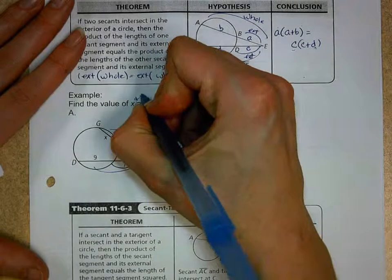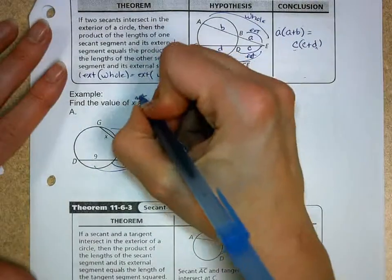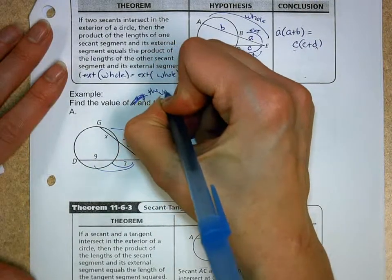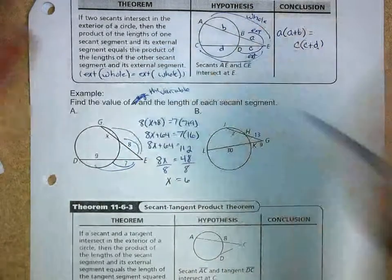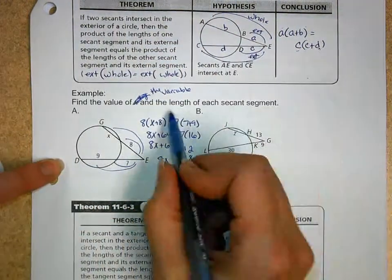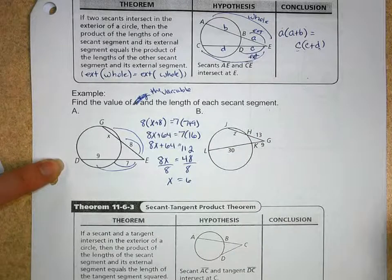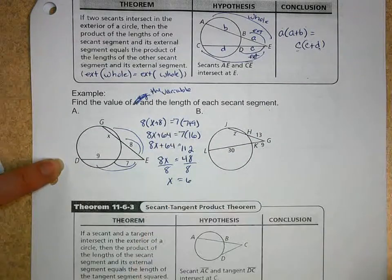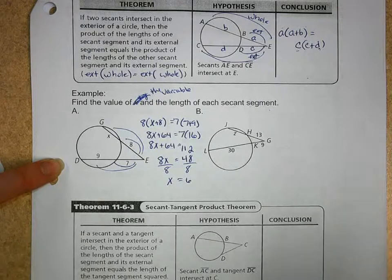So that's the length of the secant segment. Now someone yelled at me earlier and said, you know, oops, found the value of, and we're just going to say the variable because I used two different letters here, not just X. Now I have to plug it in for the length of each secant segment. Plug it in. Plug it in. Right guys? Or formally we say substitution.